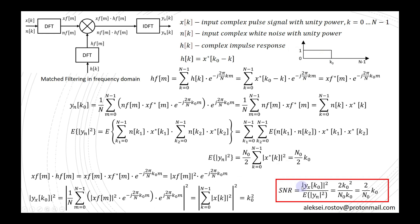The signal-to-noise ratio, as the ratio of signal power at time k0 to the expected value of the noise, gives an SNR at k0 that is k0 times greater than the SNR on the matched filter input. This factor k0, proportional to the length of the input signal, is the so-called matched filter gain.